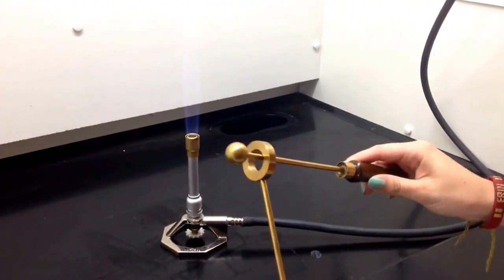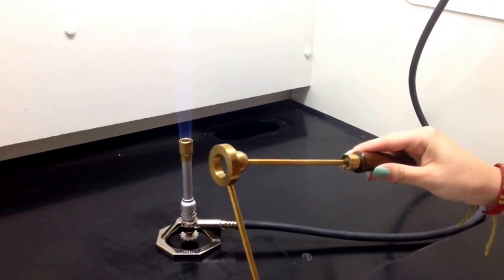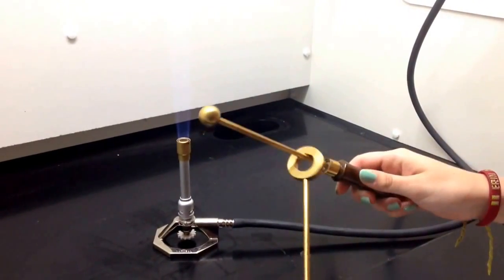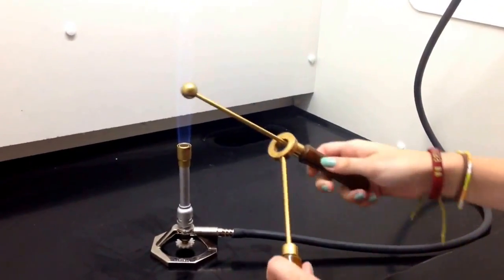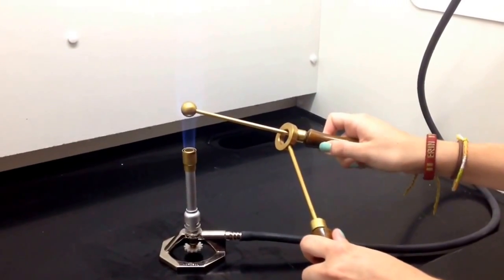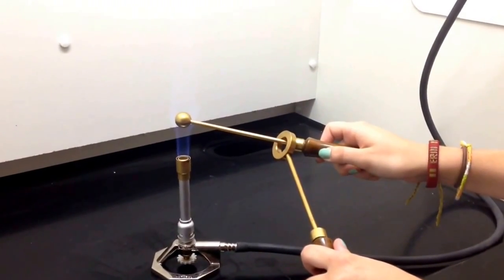You can get the brass to go in and out of the circle when it's cool, but once you heat it, it will start to expand and then it will no longer go through the hole.